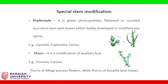The next type of modification is special stem modification. Phylloclade: it is a green, photosynthetic, flattened or rounded succulent stem, with leaves either feebly developed or modified into spines. Examples: Opuntia, Euphorbia, cactus.